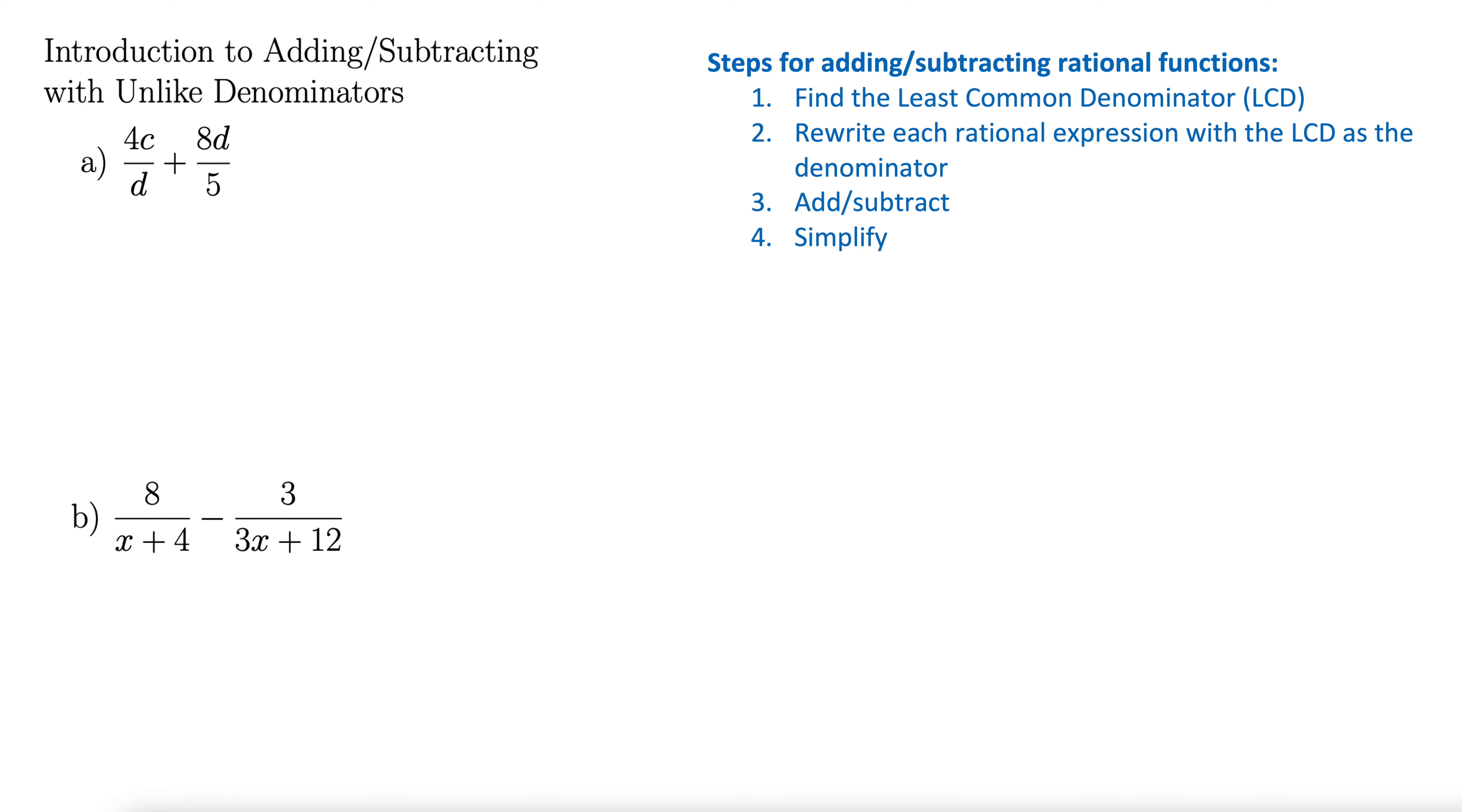First step, find the least common denominator, also known as the LCD. So recall that to find the LCD, you begin with the denominator of the first rational function. So let's just do d. And then you move on to the second denominator and say, what do I need to add to my LCD to make sure I include the second denominator as well? Well, we have a d but we don't have a 5, so let's add in a 5. There's our LCD. If we add more terms, we just keep doing that. So our LCD is 5d.